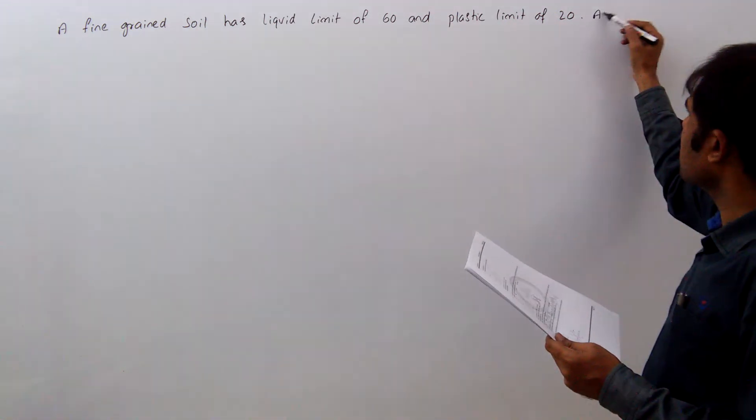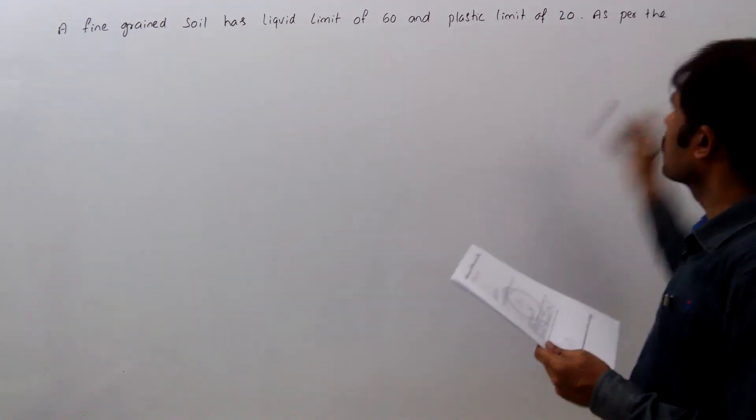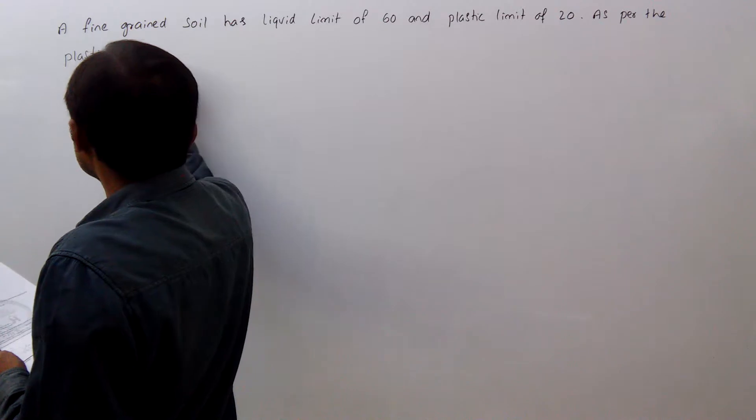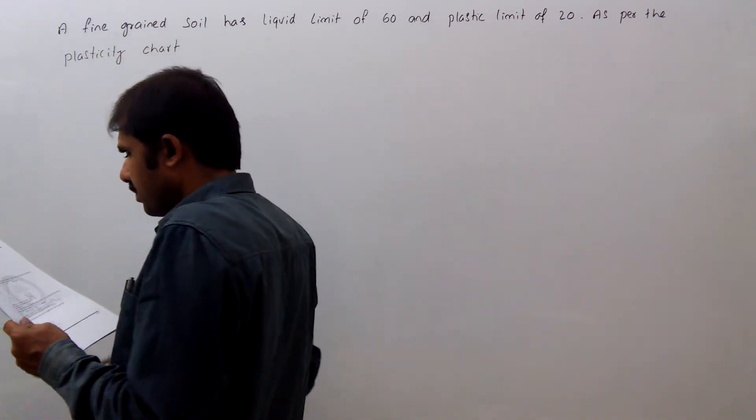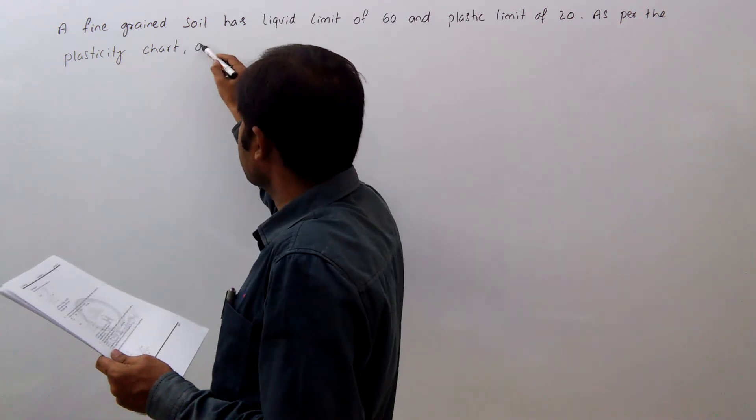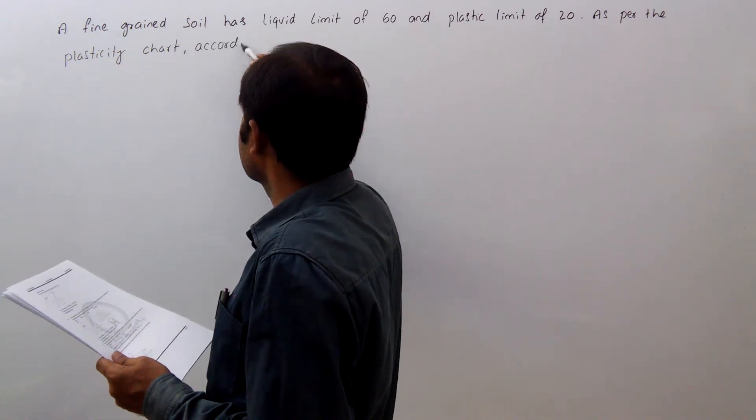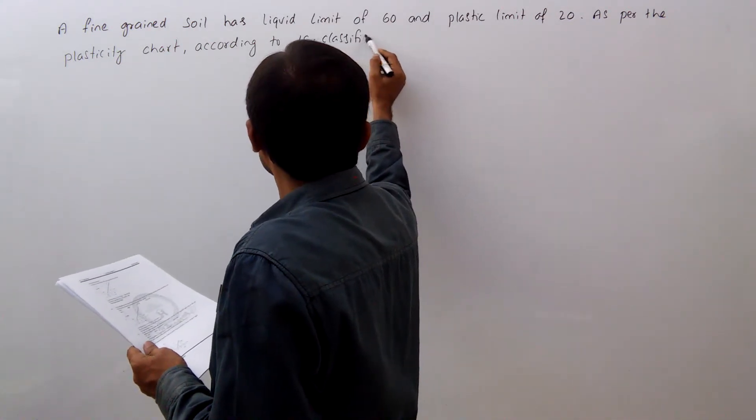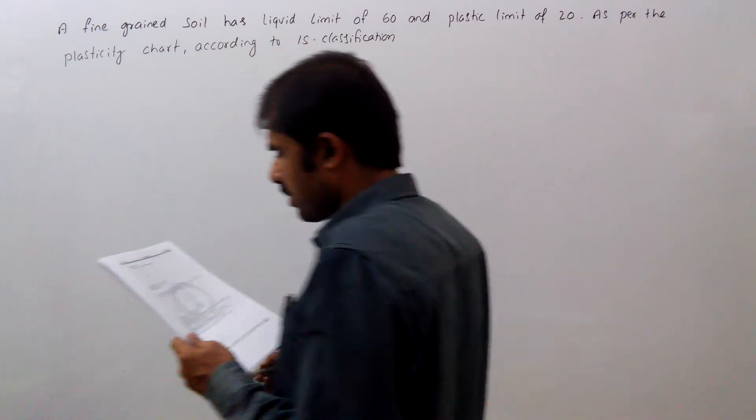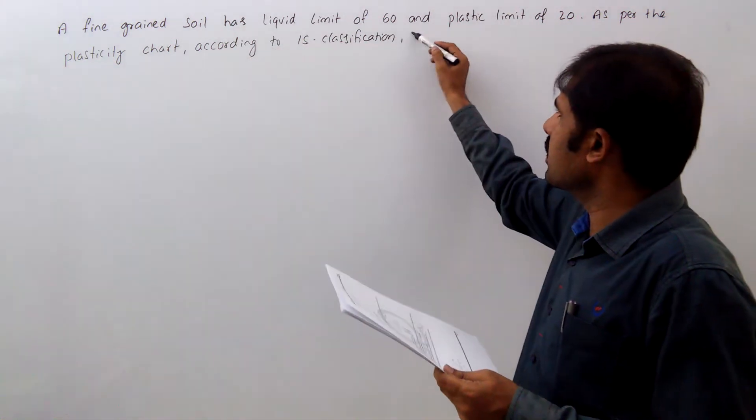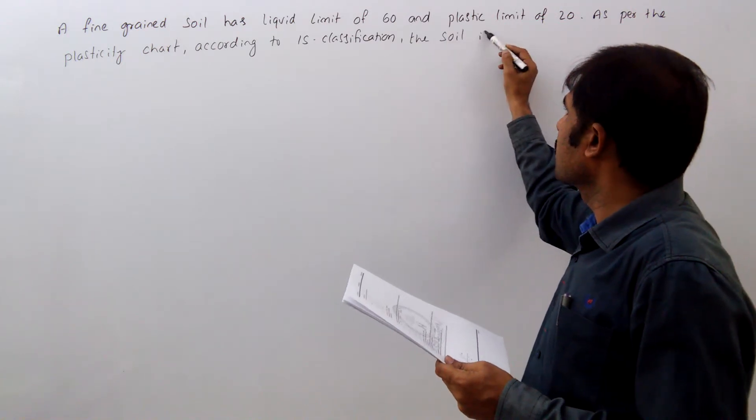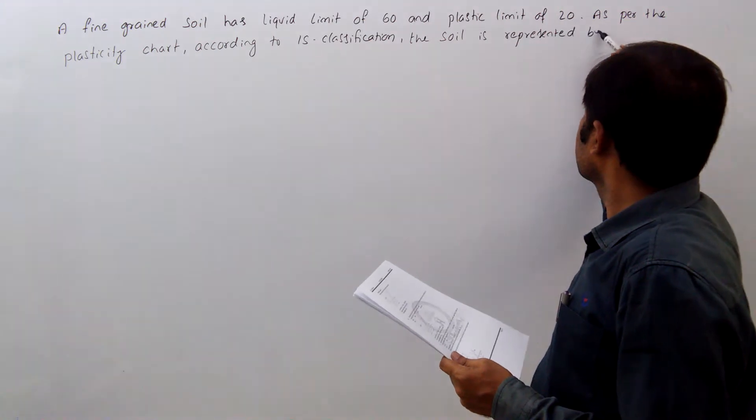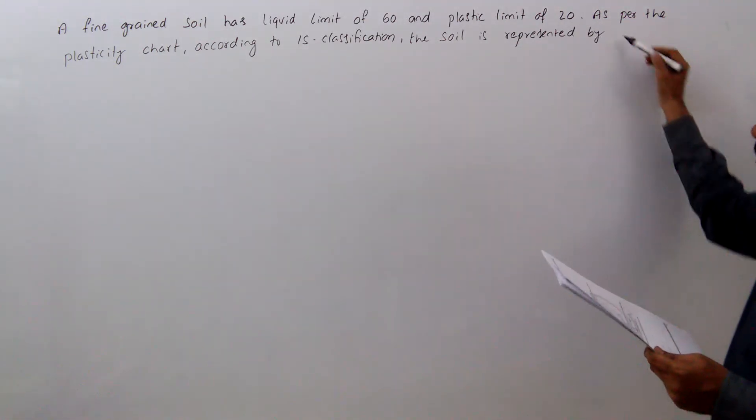As per the plasticity chart, according to IS classification, the soil is represented by letter symbols.